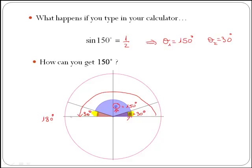With this, can you see any relationship between 150 and 30? So you can get 150 by just using 30. If you look at this, 150 is actually the same as taking 30 from half of a revolution. So 150 is the same as 180 minus 30.